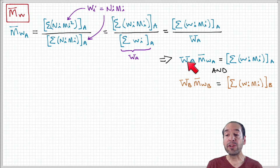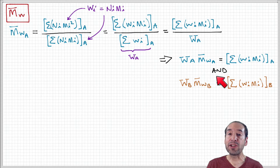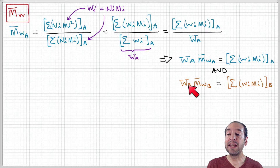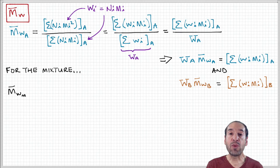That summation of Wi·Mi is equal to the product of the weight of polymer A times the weight average molecular weight of polymer A. We can use a similar argument to get the equivalent expression for polymer B: the summation of Wi·Mi over the entire distribution of chains in polymer B is equal to the product of the weight of polymer B times the weight average molecular weight of polymer B. Now we can calculate the weight average molecular weight of the mixture.